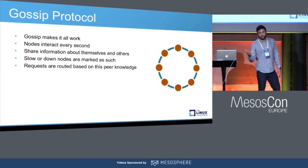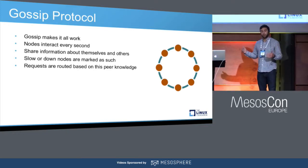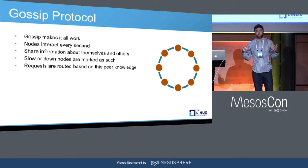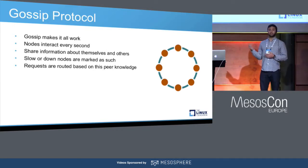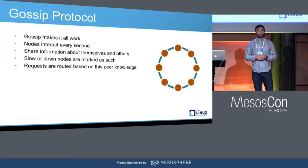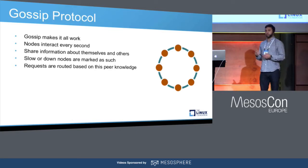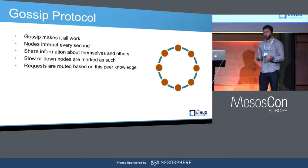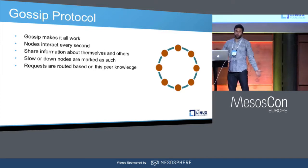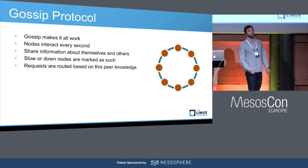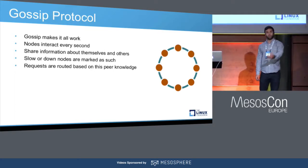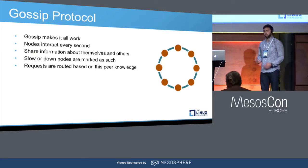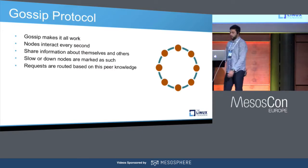The gossip protocol is what makes it all work and what makes it peer-to-peer. These nodes are constantly talking and exchanging messages every second. Those messages contain the health of the nodes — whether they're up or down and where they're located — and this is how the different nodes learn about each other. All nodes communicate with each other; it's not just a one-to-one relationship. Based upon this communication, requests are routed. So if one node gets very slow, the cluster knows to steer requests around that slow node in order to keep SLAs and latencies in a good state.